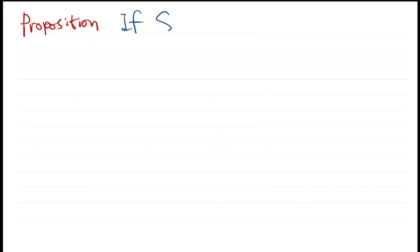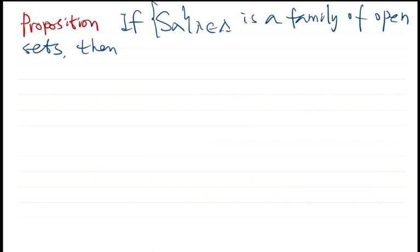The statement is that if S_lambda is a family of open sets, then the union, denoted by this symbol, is open. The union is also an open set. So before we prove this proposition, I will remind you what the union of a family of sets is.